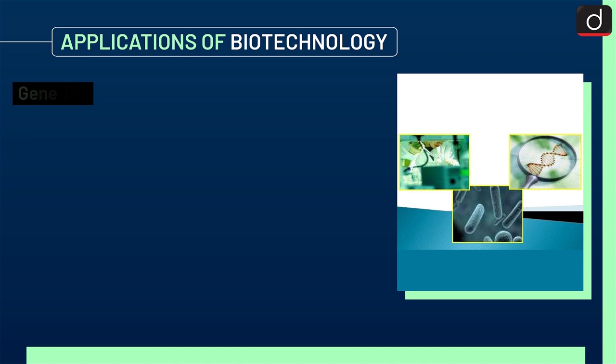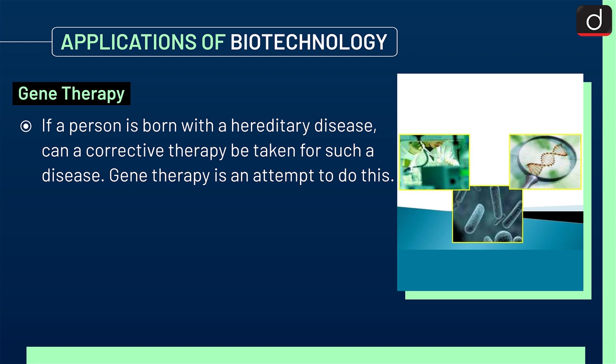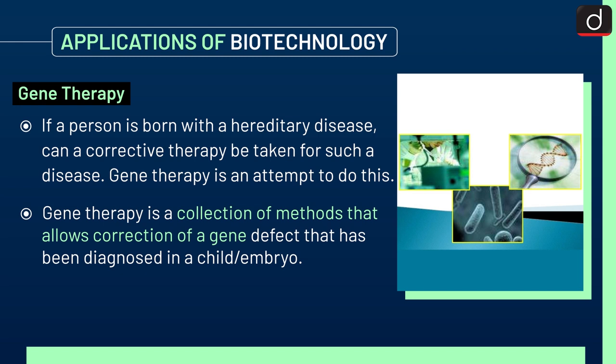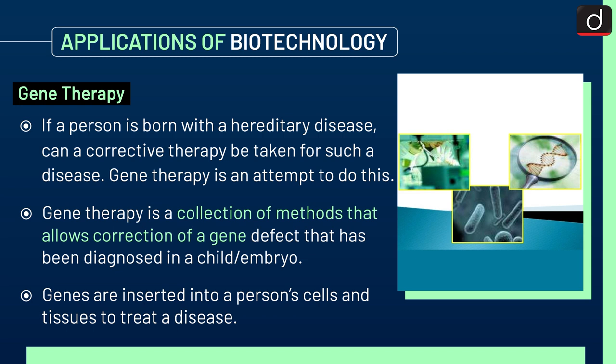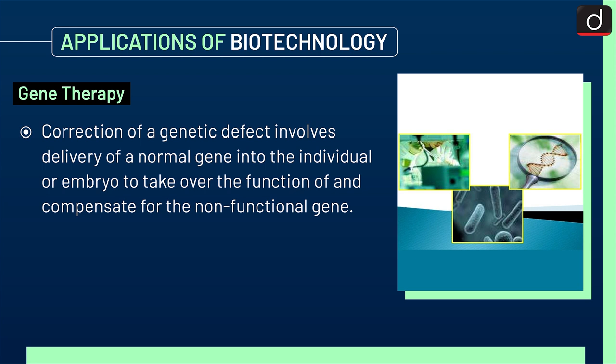Next is gene therapy. If a person is born with a hereditary disease, can a corrective therapy be taken for such a disease? Gene therapy is a collection of methods that allows correction of a gene defect that has been diagnosed in a child or embryo. Genes are inserted into a person's cells and tissues to treat a disease. Correction of a genetic defect involves delivery of a normal gene into the individual or embryo to take over the function of and compensate for the non-functional gene.